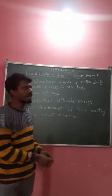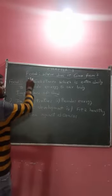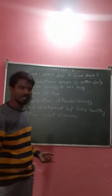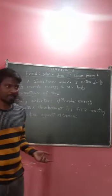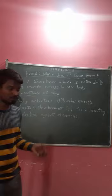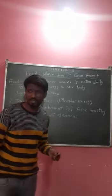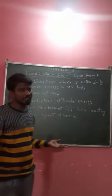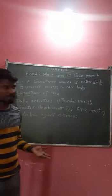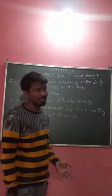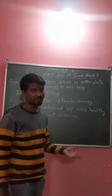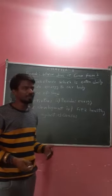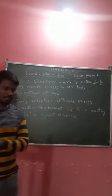We usually eat different kinds of food daily. So in breakfast, you eat bread, dosa, bibli. In lunch, you eat different kinds of food — maybe rice, chapati. In dinner, you eat different kinds of food. Different varieties of food. You don't eat the same kinds of food daily.